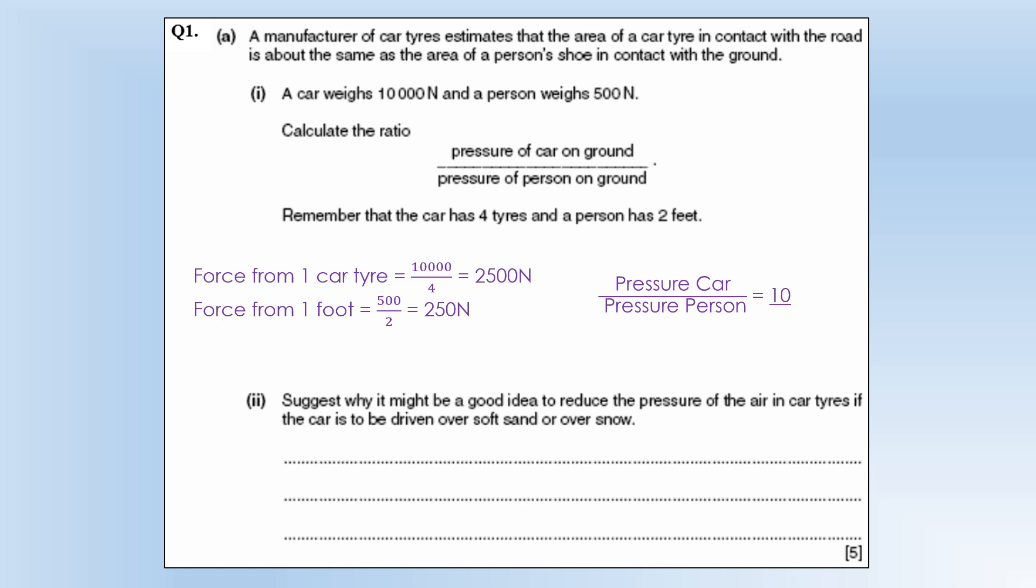So suggest why it might be a good idea to reduce the pressure of the air in car tyres if the car is to be driven on soft sand or over snow. Well the idea here is to increase the surface area in contact with the ground so it reduces the pressure acting on the ground and that reduces the risk of sinking.